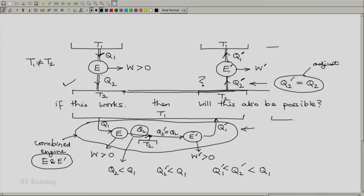This is equivalent to an engine E and E prime absorbing heat equal to Q1 minus Q1 prime from the reservoir at temperature T1 and producing work equal to W plus W prime. Since both of these are positive, the sum is also positive. And we have shown that Q1 minus Q1 prime, Q1 is greater than Q1 prime, so this one also is greater than 0. So that means this is equivalent to a one T heat engine.